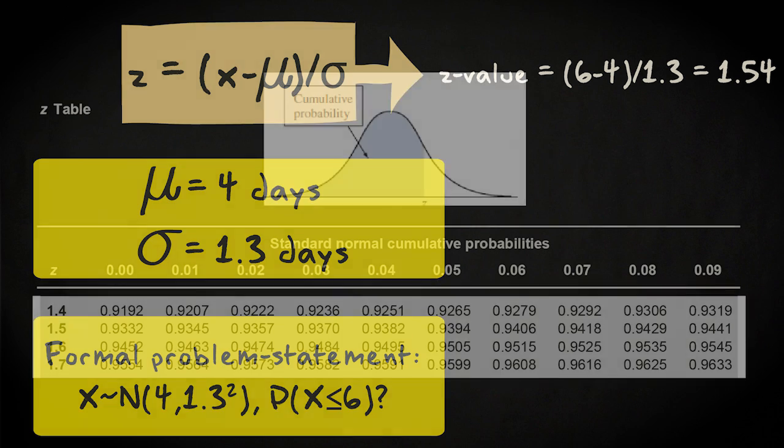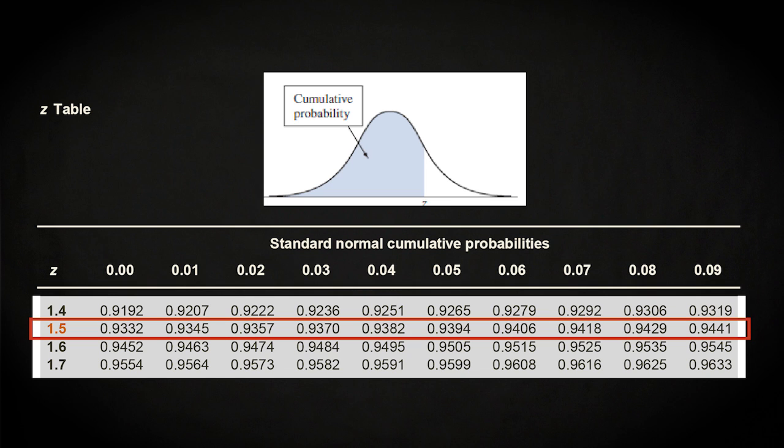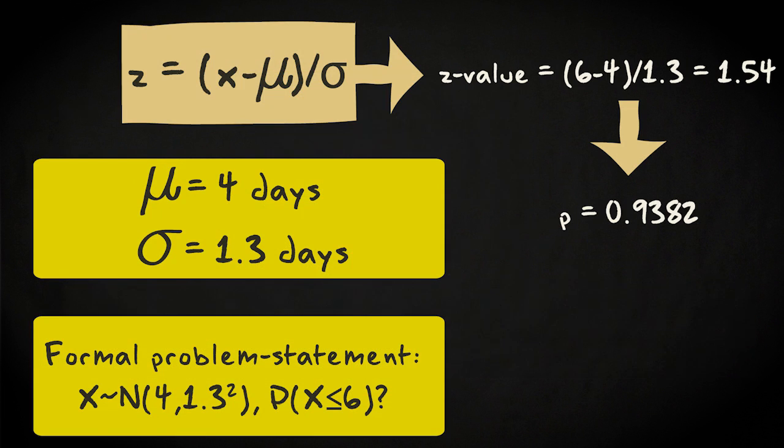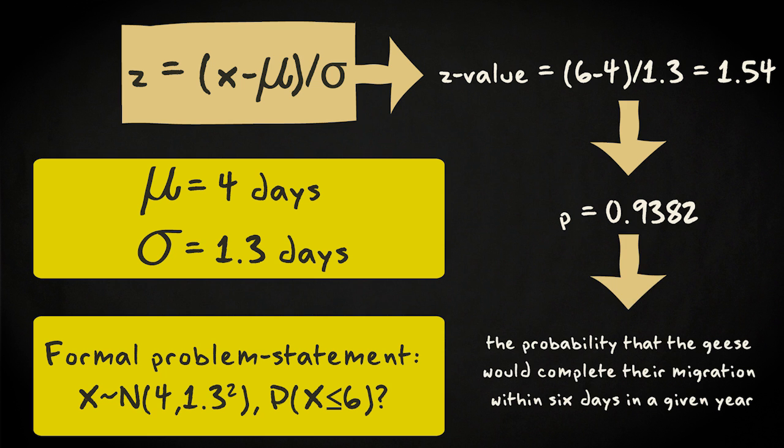Next, you should look up the Z-value in the table and find the cumulative probability that matches with this value. As you see, this Z-value matches with the probability of 0.9382. And this is the answer to the question. The probability that the geese would complete their migration within 6 days in a given year.